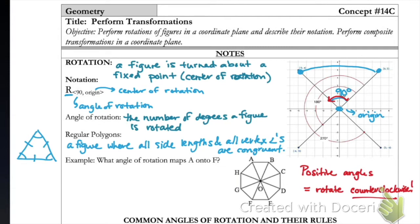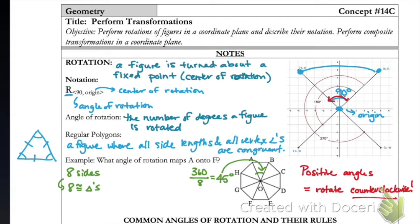Let's use that in our next example: which angle of rotation maps A onto F? Looking at this figure, it is a regular polygon because all the sides are congruent. We can draw segments from each vertex across to its corresponding one to get eight congruent triangles, meaning each central angle is congruent. Since all the way around is 360 degrees, each central angle is 360 ÷ 8 = 45 degrees.